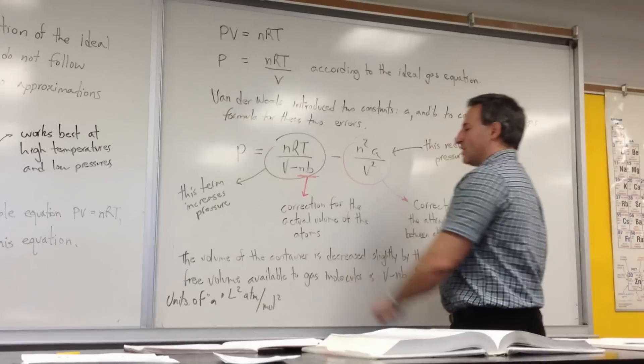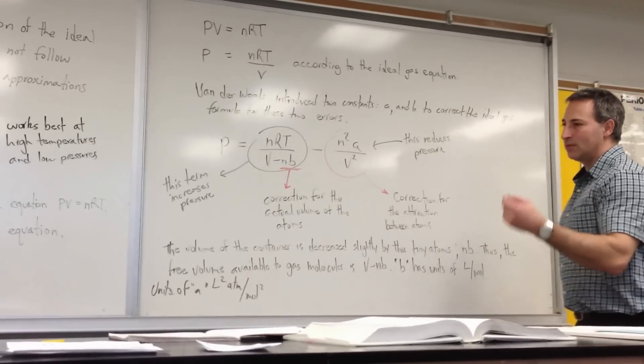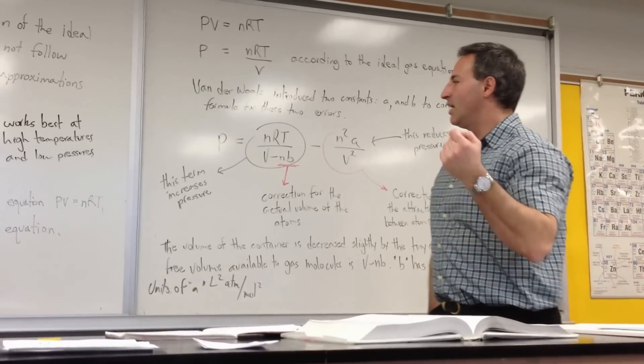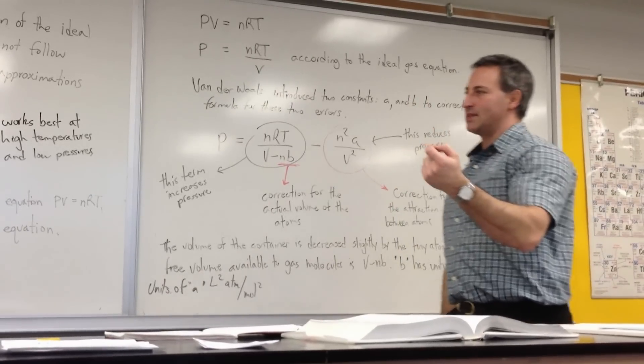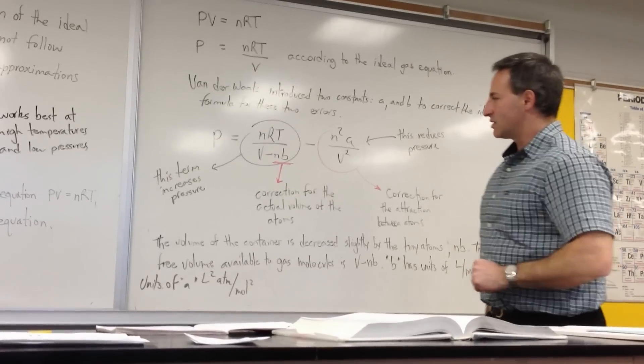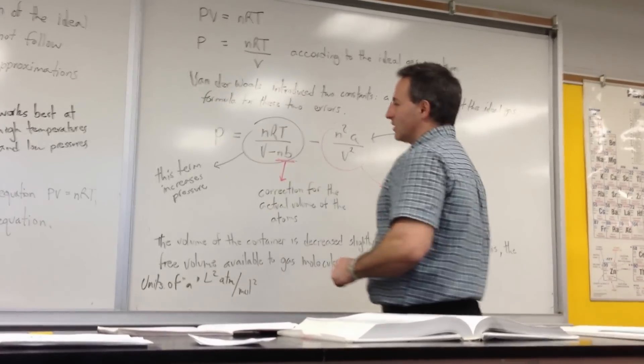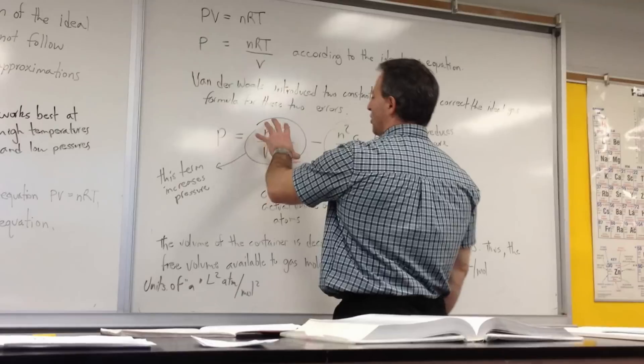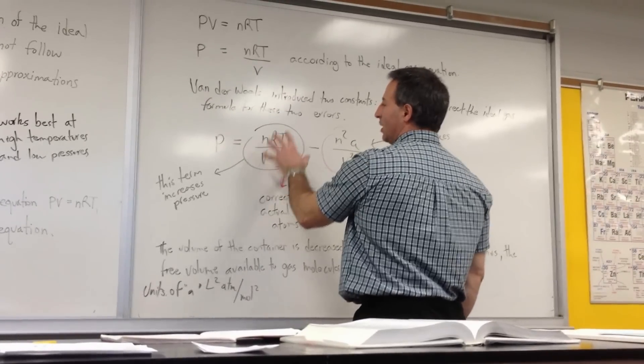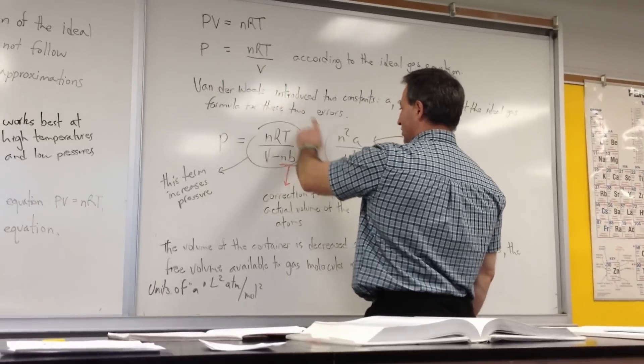This term is the correction for the actual volume of the atoms. The actual atoms, although they are extremely small, they do have an actual volume, and that takes away from the volume that the gas has to occupy when it's going through its excursions in the container. So this term tends to increase the pressure, because by making the denominator smaller, you make this term bigger, so that increases the pressure.